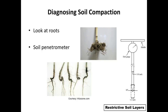Another good tool for assessing soil compaction is the penetrometer. It's essentially a stainless steel rod with a pointed end that we push into the ground to give us an idea of the relative bulk density of that soil and assess its compaction status.